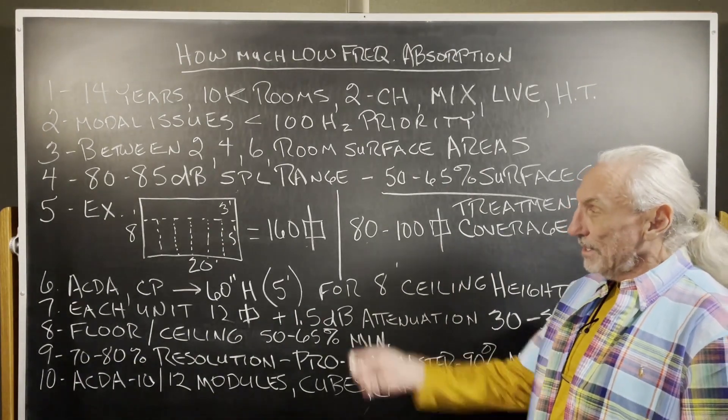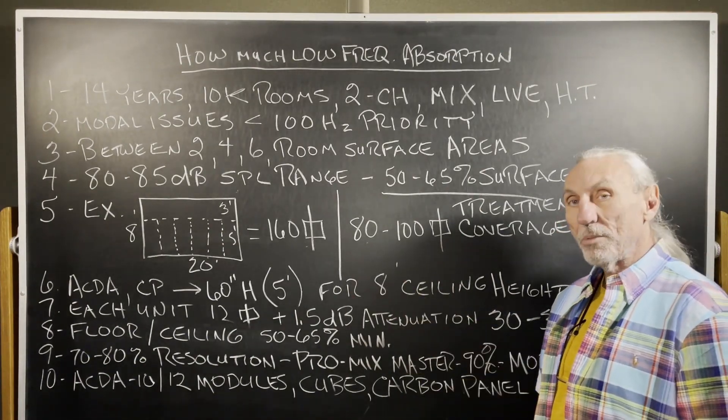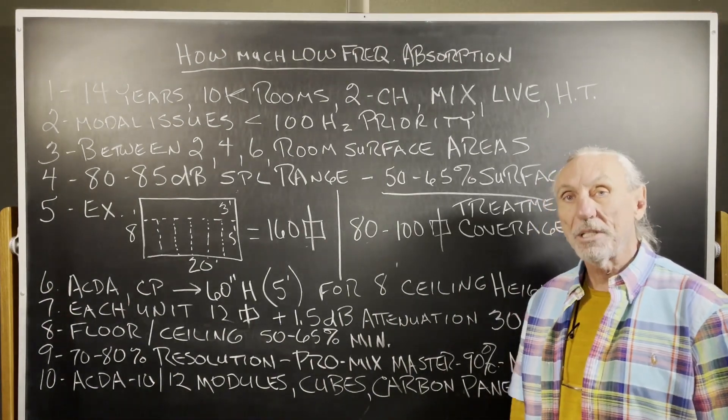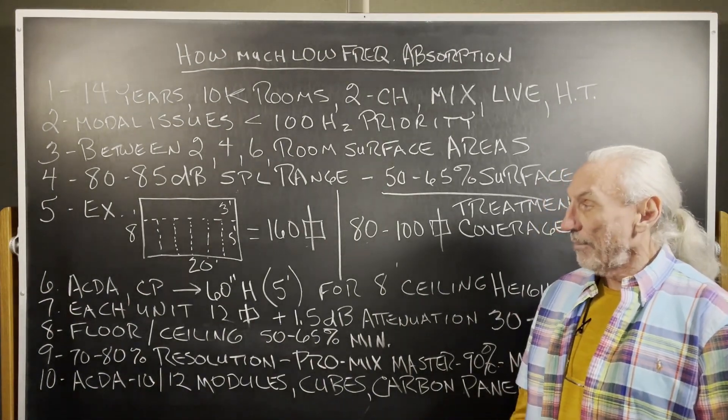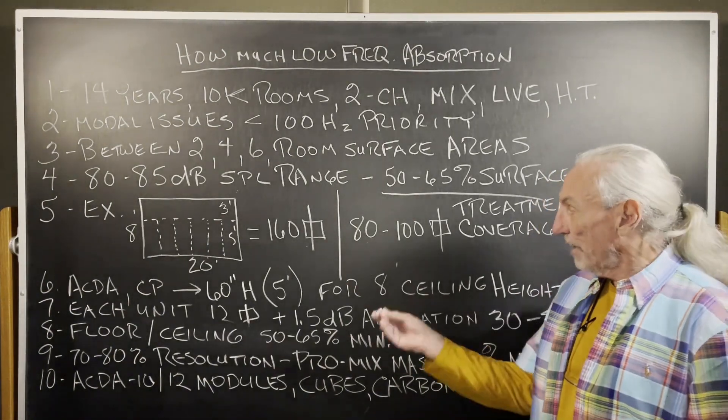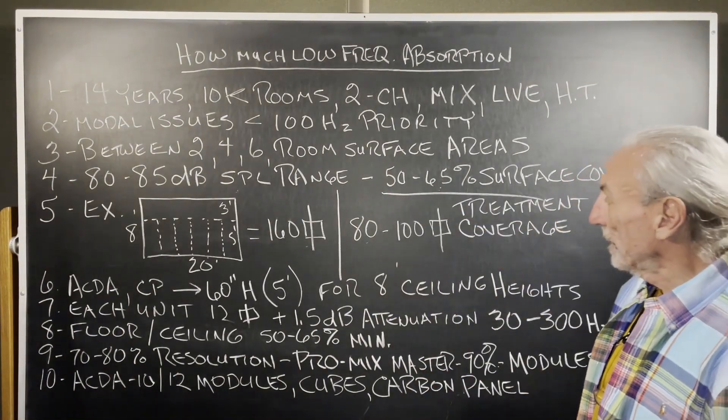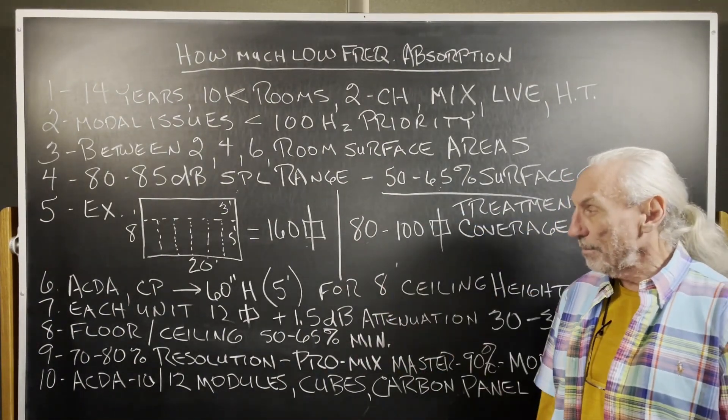And that's the reason our units are 60 inches high, because when we started, they were always going in eight foot ceilings. So I wanted one unit that satisfied that 50 to 65 percent surface area coverage that would be freestanding.